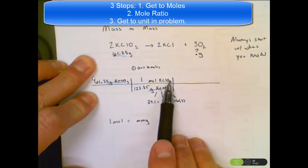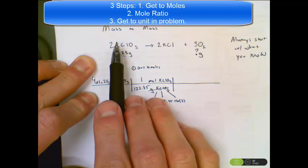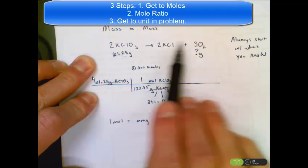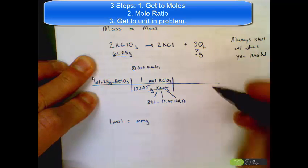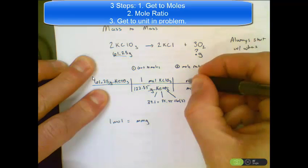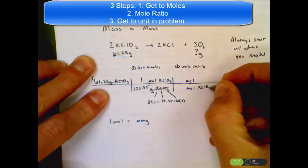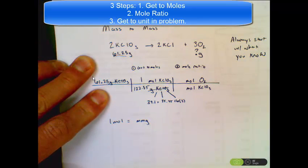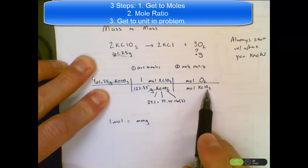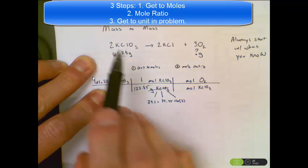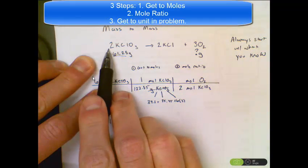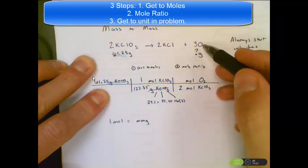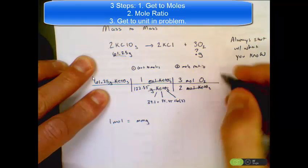Because I'm in moles of KClO3, I can now compare moles of KClO3 to moles of O2 using my coefficients. This is my mole ratio step — stack your moles. Since I don't want moles of KClO3 in my final answer, I put them on the bottom so they cross off, and I put the chemical I want to know about on top. The coefficient in front of KClO3 is 2, and moles of oxygen is 3. Moles of KClO3 cross off.